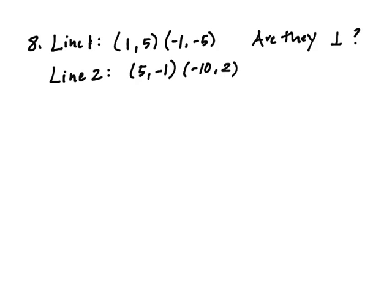So the question was line 1 passes through (1, 5) and (-1, -5). And line 2 passes through (5, -1) and (-10, 2). And my question is, are they perpendicular?